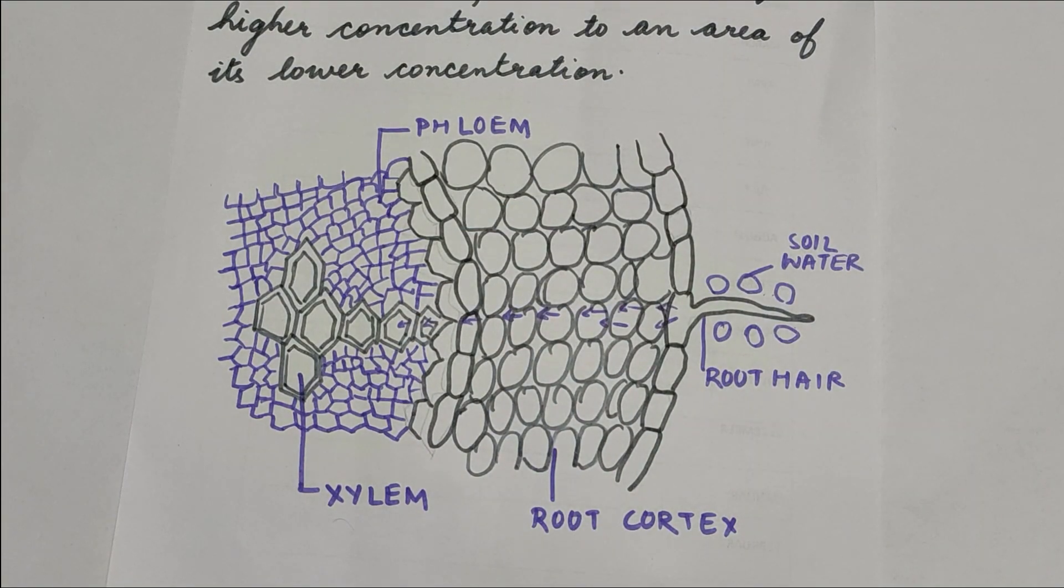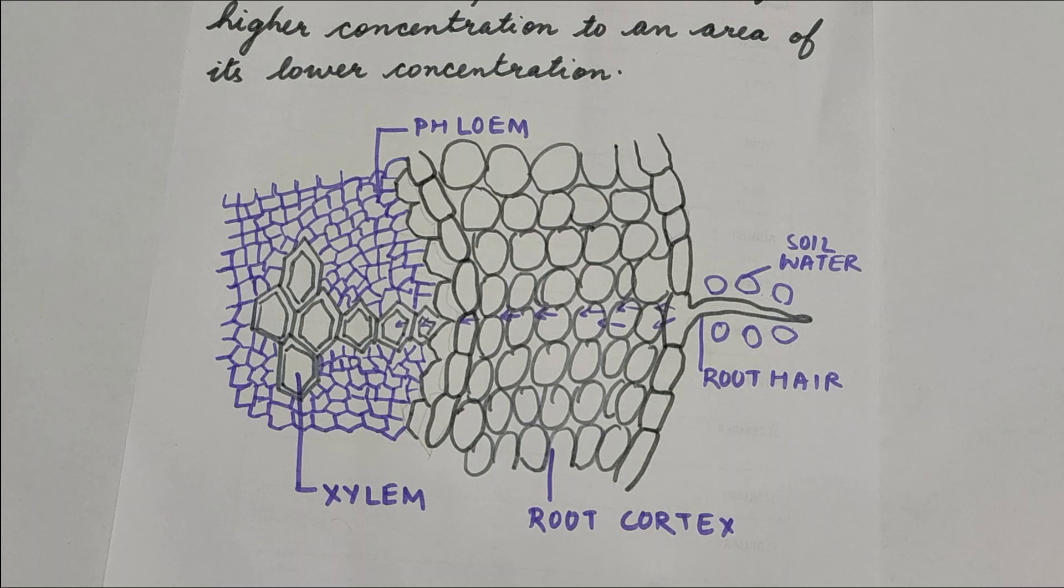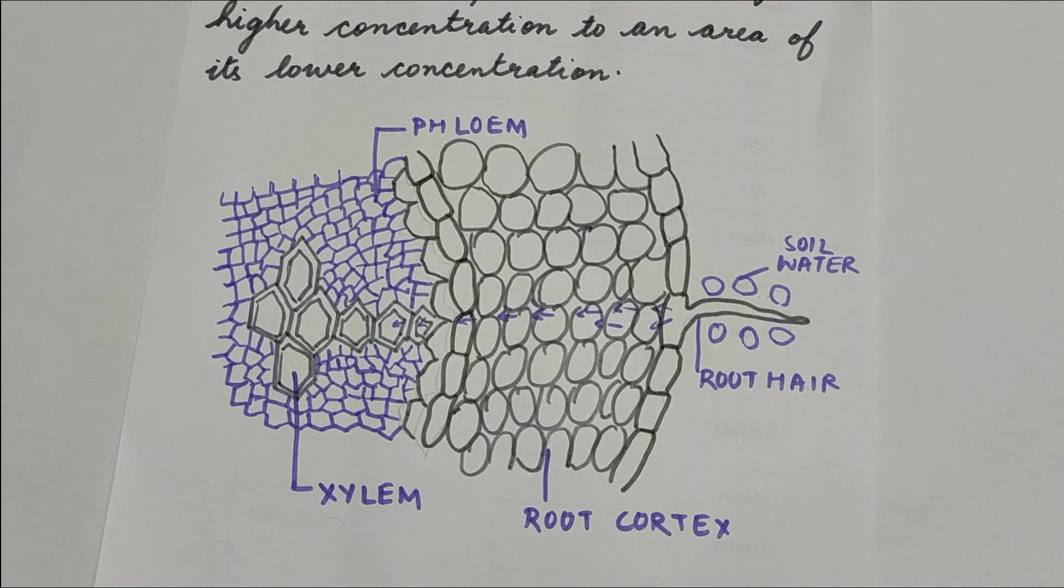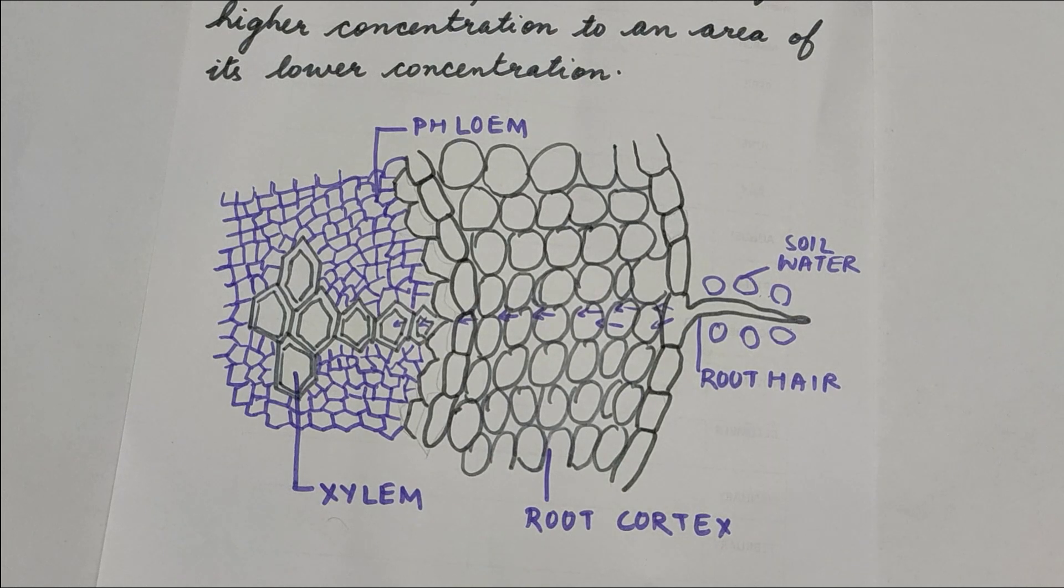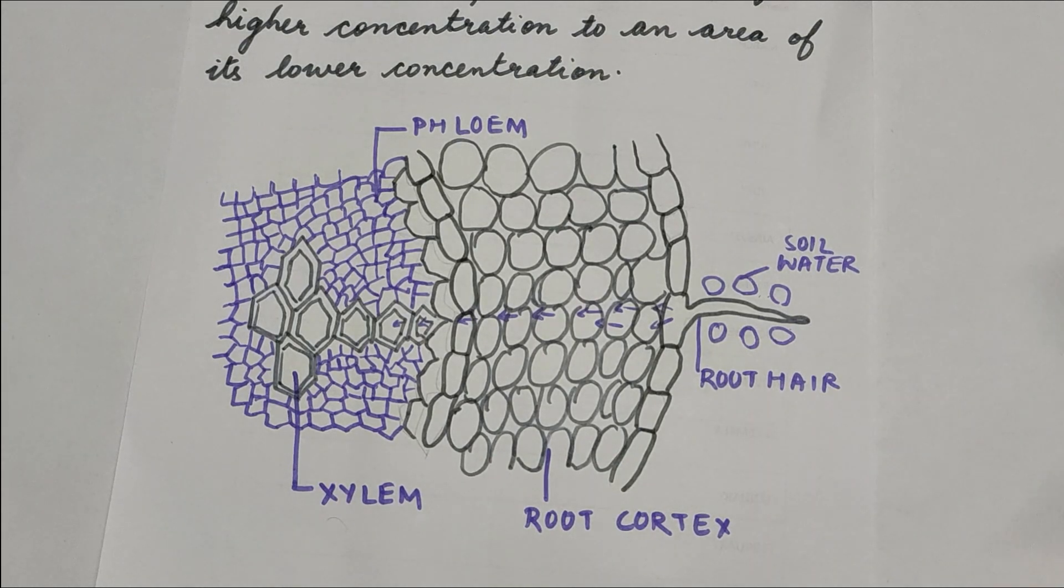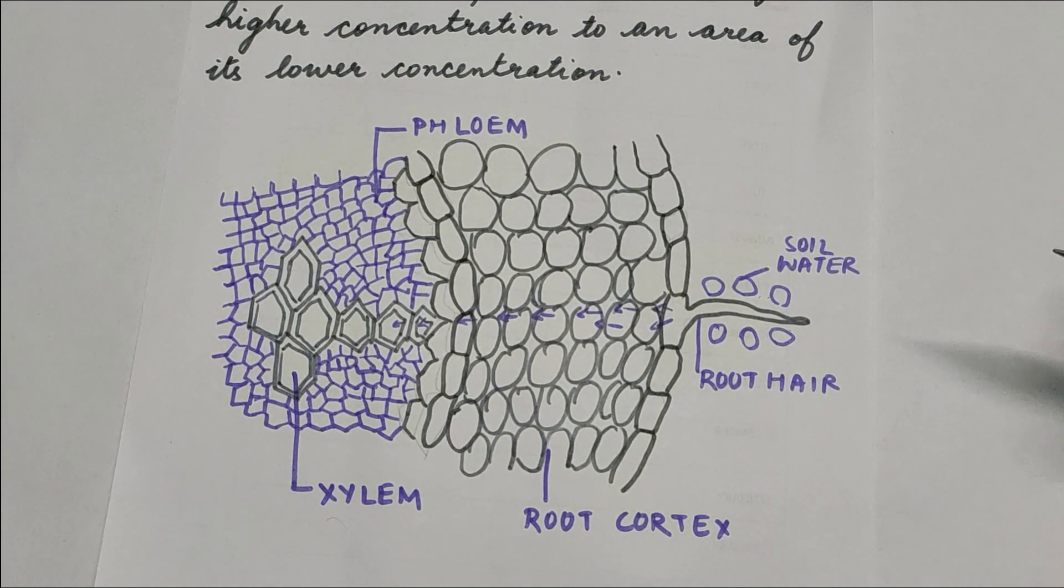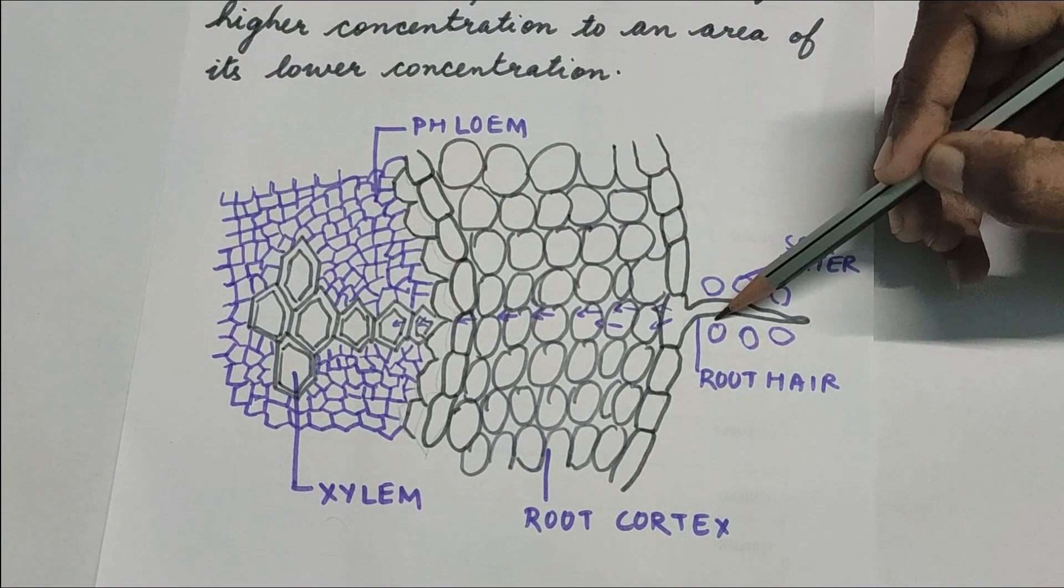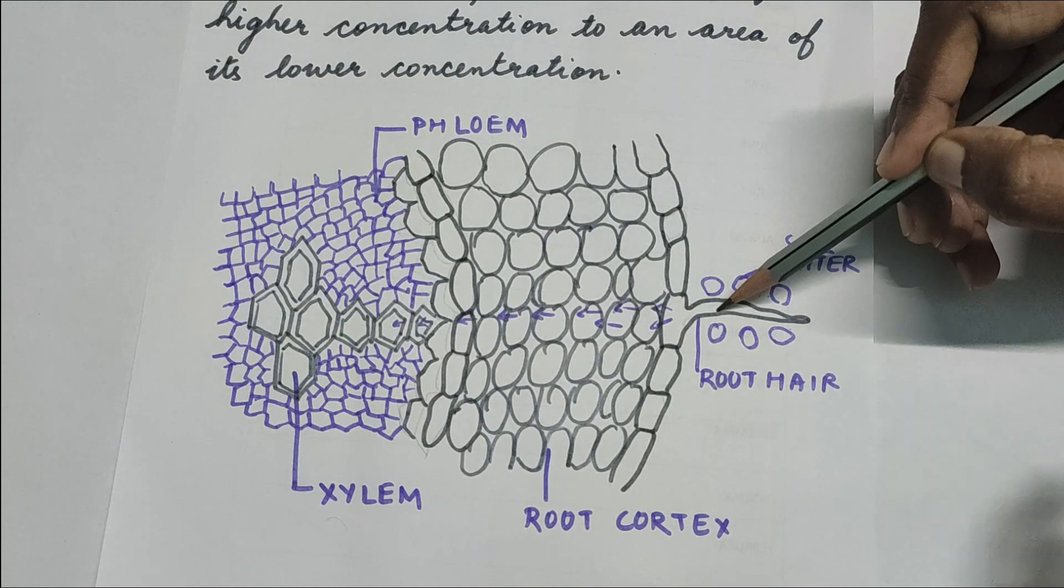Here you might be thinking, where is the semi-permeable membrane? It is nothing but the cell membrane of the cell which allows only certain particles to enter into the plant body. Then the water is absorbed and the concentration in the root hair will increase.